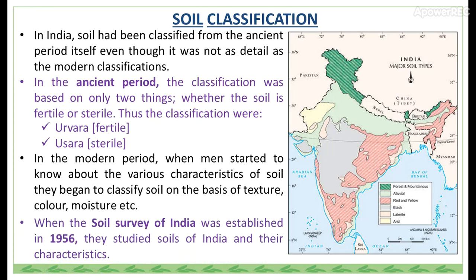In the map, the green portion represents forest and mountain areas. The bluish-green colored portion shows alluvial soil. The red-lined portion shows red and yellow soil. The bluish colored portion shows black soil. The orangish portion shows laterite soil, whereas the yellow portion shows arid soil.